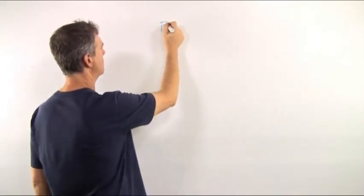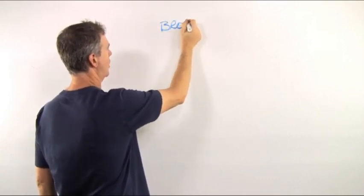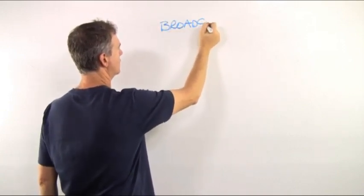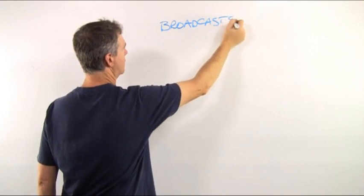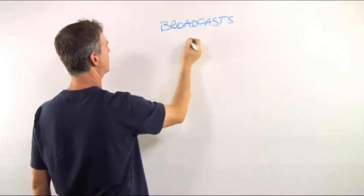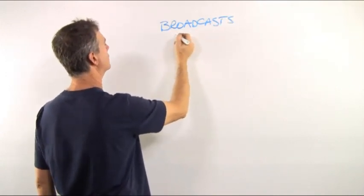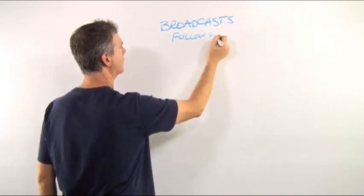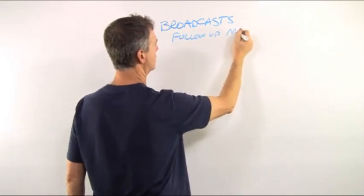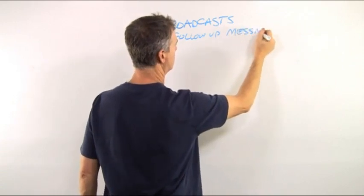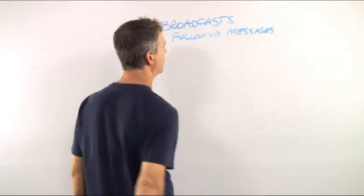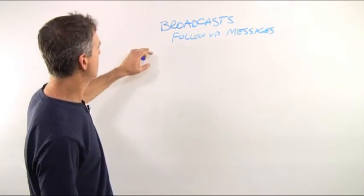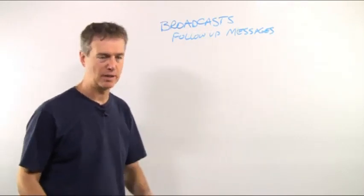So, first of all, we have two types of messages. There's broadcasts and there's follow-up messages. Okay, so the difference is a follow-up message, that's your autoresponder sequence.